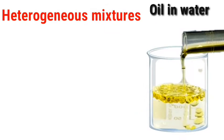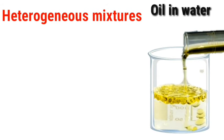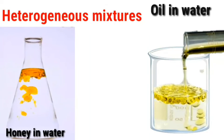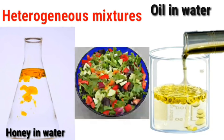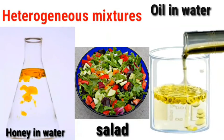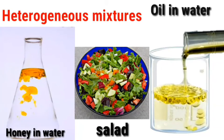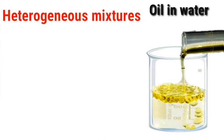What is a heterogeneous mixture? Let's look at the example of oil plus water. Oil and water do not mix the same way throughout. When we mix a salad — with cabbage, carrot, cucumber, and other ingredients — the components are not uniformly distributed. This kind of mixture is called a heterogeneous mixture.